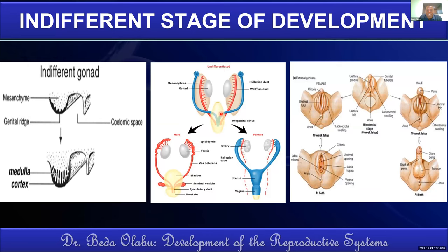These embryonic ducts are designated to become the internal genitalia, male or female. The third type of indifferent stage is the indifferent stage of the external genitalia — a time when we have common structures that can become either male or female external genitalia. At this time of development there are three structures: the genital tubercle, the urethral fold, and the labioscrotal swelling — whether the baby becomes male or female, those three structures are present.